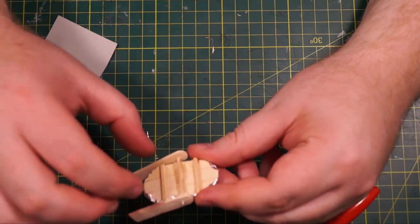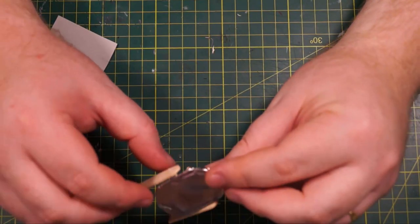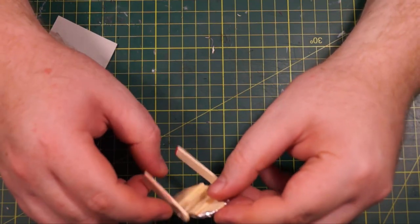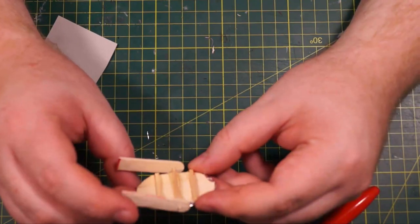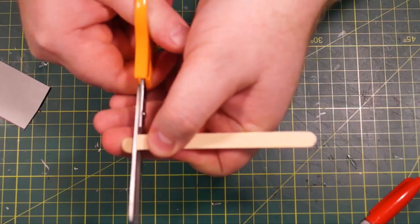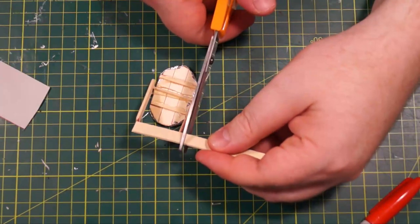So then just run a line of hot glue over the back and the stand that we've created and you want to hold it at an angle so that when it cures, the mirror is at a slight, probably 10 or 15 degree angle.